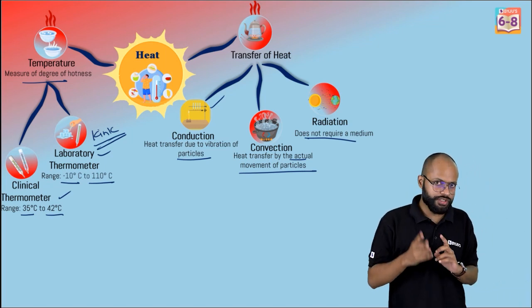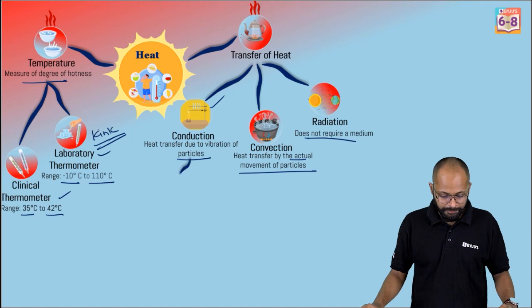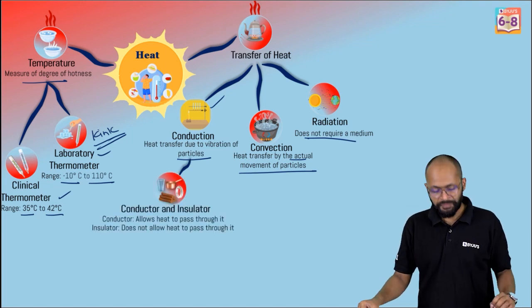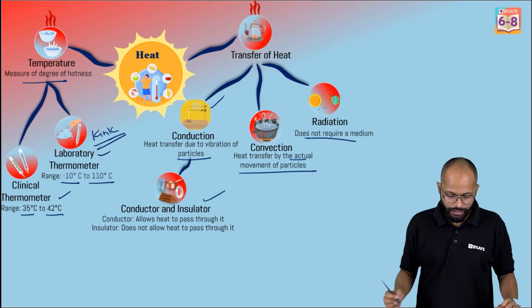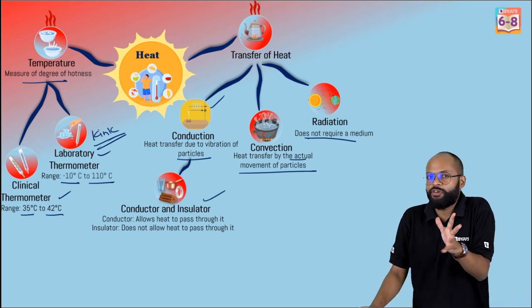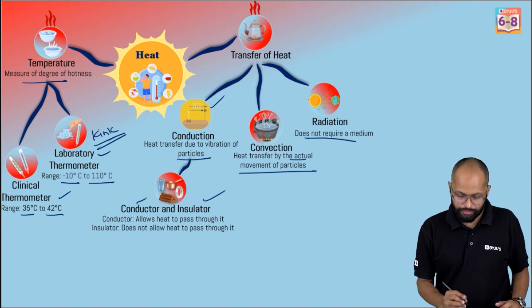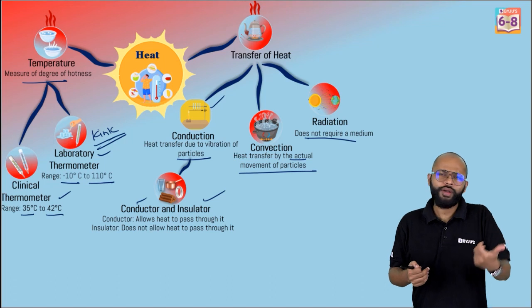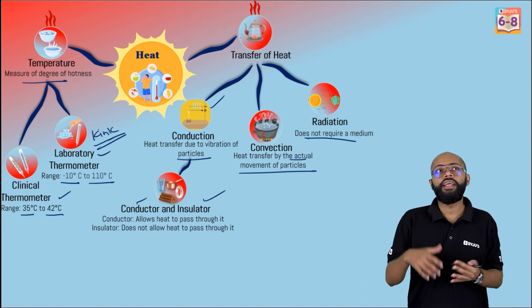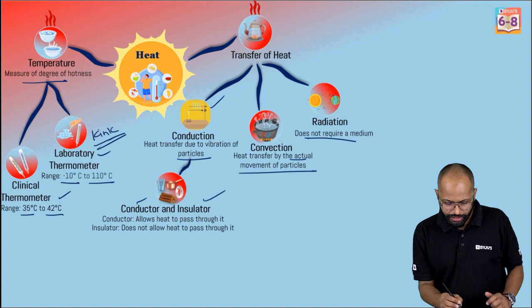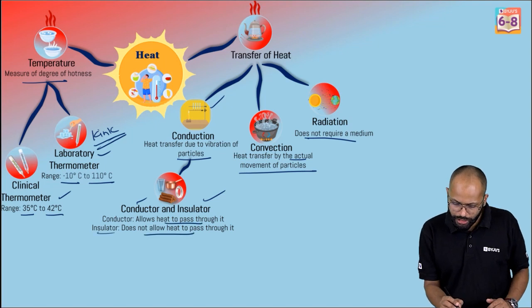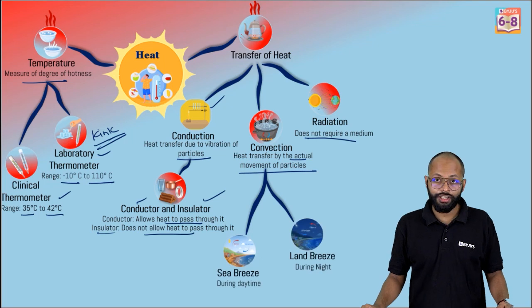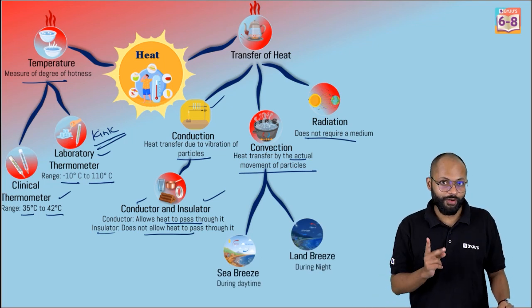In conduction, we have two types of materials: conductors and insulators. Conductors, as the name suggests, allow heat to pass through them. Insulators do not allow heat to pass through them. Then in convection, we had two very important phenomena — sea breeze and land breeze.